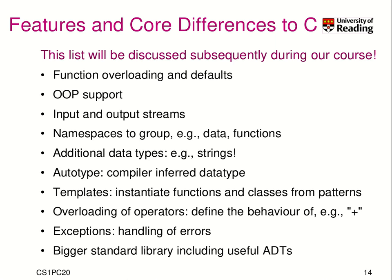A key distinctive feature is object-oriented support. You already heard about input and output streams and namespaces. One thing to point out is that there are new data types that are syntactic sugar and make our life easier, such as real strings. And there is the standard library, which includes abstract data types that we may find very useful.